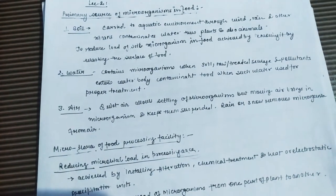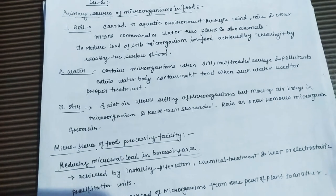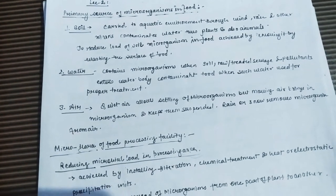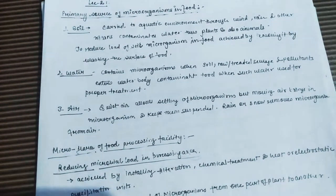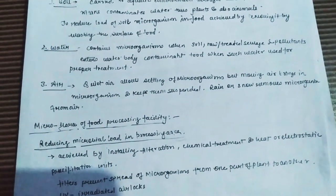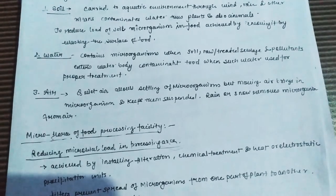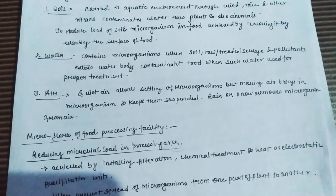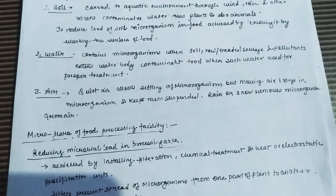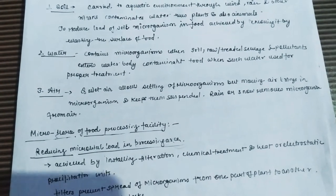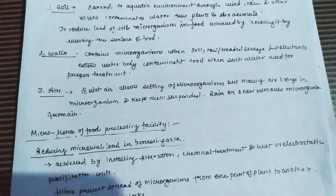Water can also contaminate food with microorganisms. In water, soil, raw treated sewage, and pollutants enter and contaminate the water body, and this contamination may then reach plants or animals.